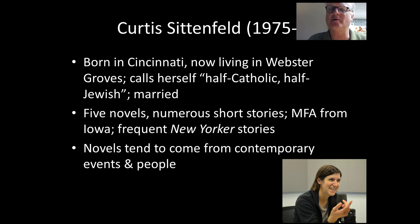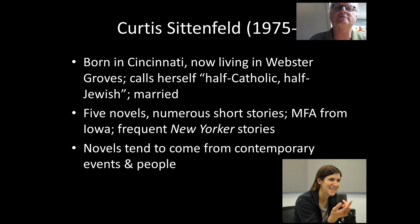She tends to use contemporary events and contemporary people. Her first book, 'Prep,' is about being in a prep school — one of those New England boarding schools. She has a book called 'The American Wife,' which is an imaginative version of what it would be like to be Laura Bush, the wife of President George W. Bush. She has another book called 'The Man of My Dreams,' which I think is quite fascinating. And her most recent book, 'Eligible,' which I read last year, I very much enjoyed as a retelling of this classic Jane Austen story about two people who meet, dislike each other, then fall in love and get married. Of all the story writers in the course this semester, she's among the youngest — a little over 40.